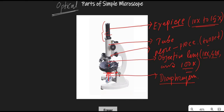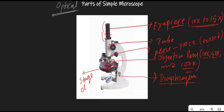The next part is the stage clips. There are two clips — one on each side of the stage — called stage clips. These stage clips are used to hold the slides in a proper fixed position. When we keep the specimen slide on the stage, the stage clips hold the slide in a fixed position so that it does not move.